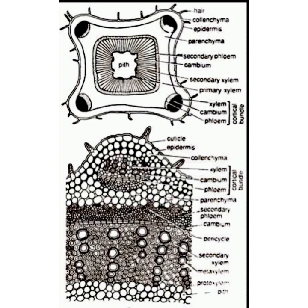The next one is the cortex. It is differentiated into collenchyma and parenchyma — you can see both in the figure. The collenchyma is several cells deep below the four protruded corners of the quadrangular section, while only a few layers deep at other places just beneath the epidermis. Parenchyma is present below the collenchyma, and many intercellular spaces are present. The cortex extends up to the vascular tissue.